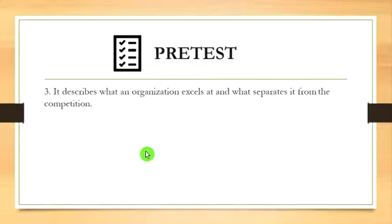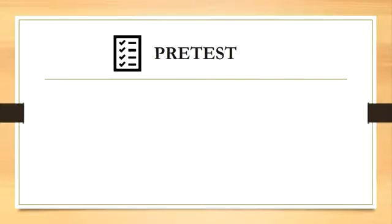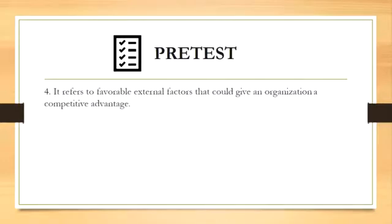Number three: it describes what an organization excels at and what separates it from the competition. A) strengths, B) weaknesses, C) opportunities, D) none of the above. The answer is letter A, strengths.